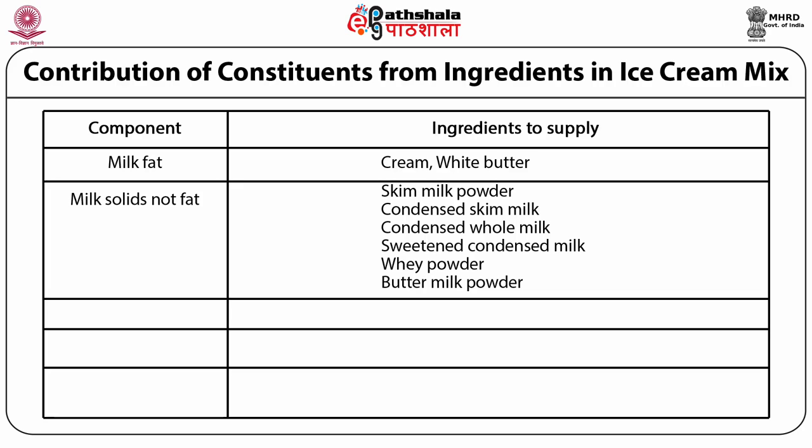Especially when using buttermilk powder, remember it contains a lot of milk fat globule membrane material, which comes from churning of cream into butter. This milk fat globule membrane contains lecithin as a natural emulsifying substance. So when utilizing buttermilk powder as an MSNF source, you can reduce the amount of added emulsifying agents. This aids in better emulsion formation, in addition to the homogenization already being performed.